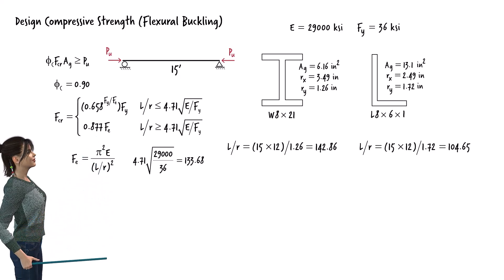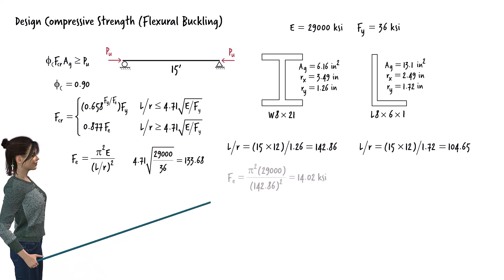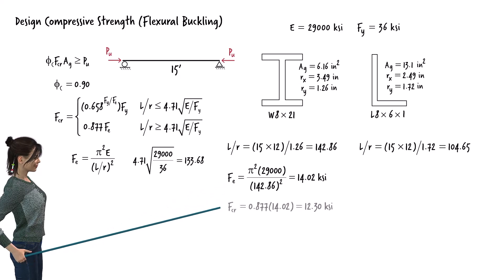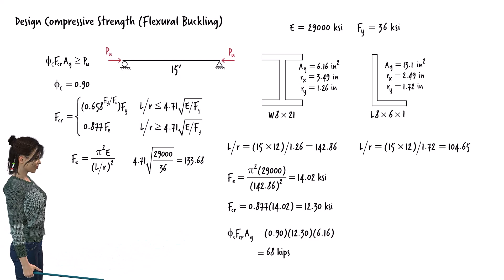For W-8 by 21 cross-section, the Euler buckling equation yields the calculated value, hence the nominal buckling strength becomes this value. Therefore, a column has a design strength of 68 kips.